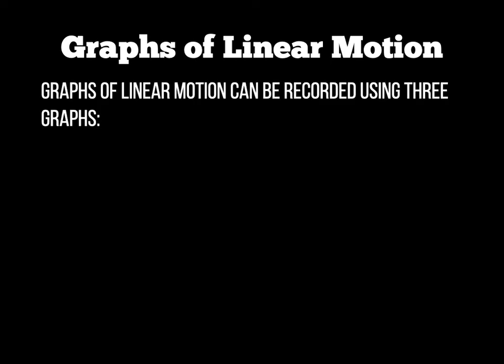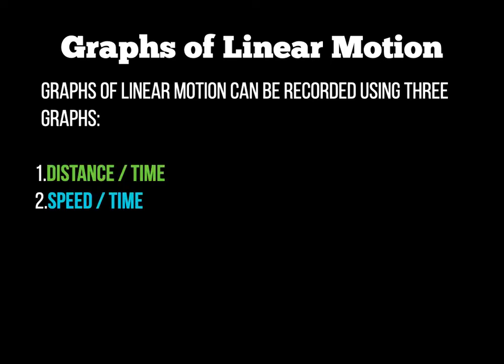The examiner can ask you about three different types of graphs in relation to linear motion: a distance-time graph, a speed-time graph, and a velocity-time graph.